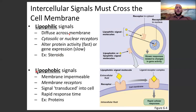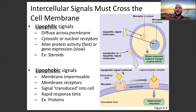Lipophilic hormones tend to end in '-one' or '-in,' like estrogen or testosterone. They are steroids or steroid-like hormones. Lipophobic signals, being lipid-fearing and polar or hydrophilic, tend to be proteins or protein-like. They signal cells by binding onto a membrane receptor. Because they can't cross the lipid membrane, they rely on extracellular receptors that transduce the signal into the cell, and they tend to have a faster response time.